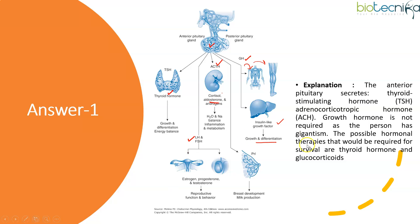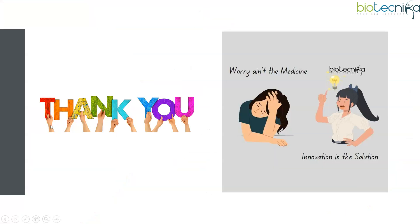The anterior pituitary secretes TSH and ACTH. Growth hormone is not required as the person has gigantism. The possible hormonal therapies required for survival are thyroid hormones and glucocorticoids. That is why the right answer is option one. Thank you.